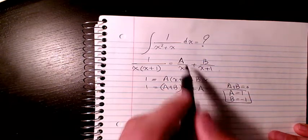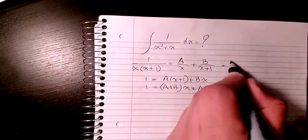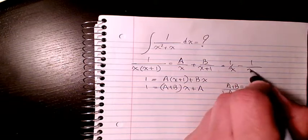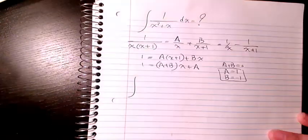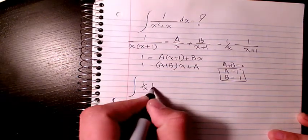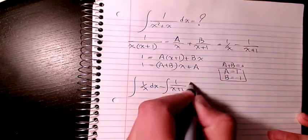I can rewrite it as 1 over x minus 1 over (x plus 1). So the integration will change to integral of 1 over x dx minus integral of 1 over (x plus 1) dx.